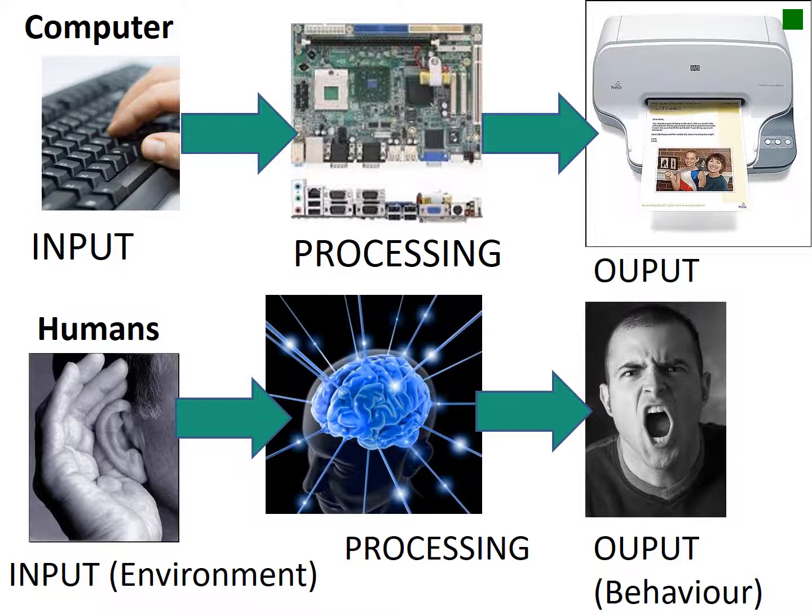Retrieval in a computer might be a week later when you open My Documents in Word to access that information, and the output might be printing it. Cognitive psychologists say human memory works in almost exactly the same way. For example, information enters our memory visually through the eyes — you might see a skyscraper.